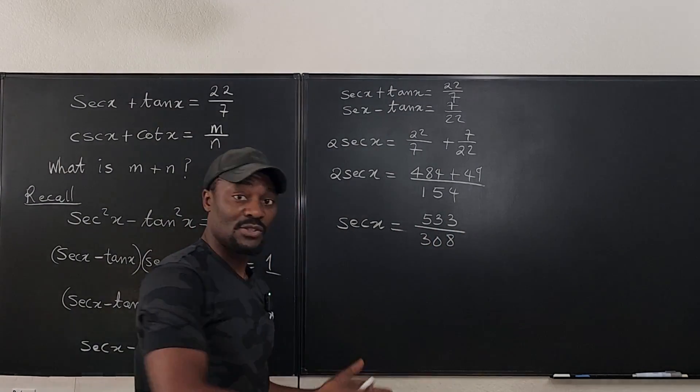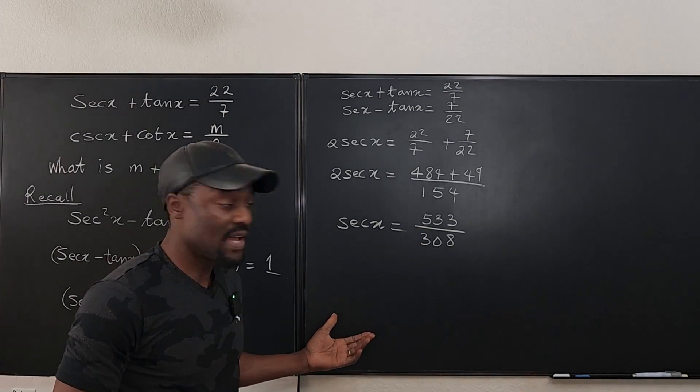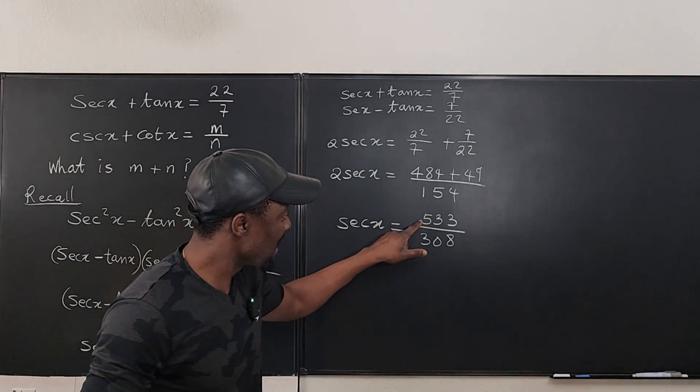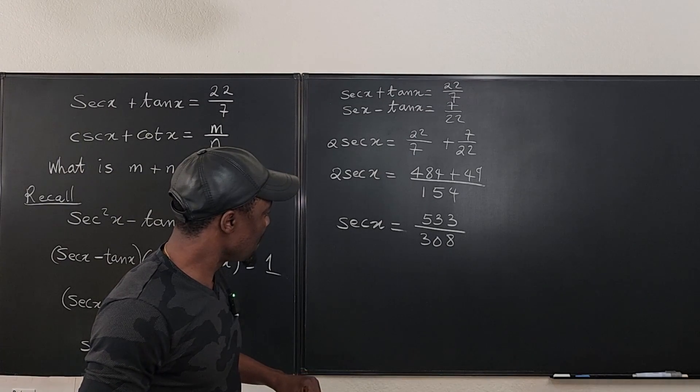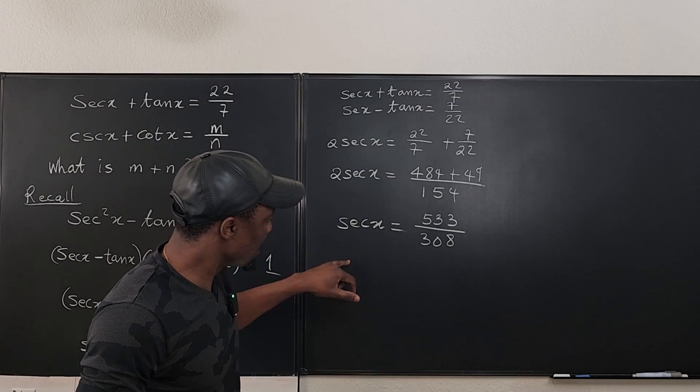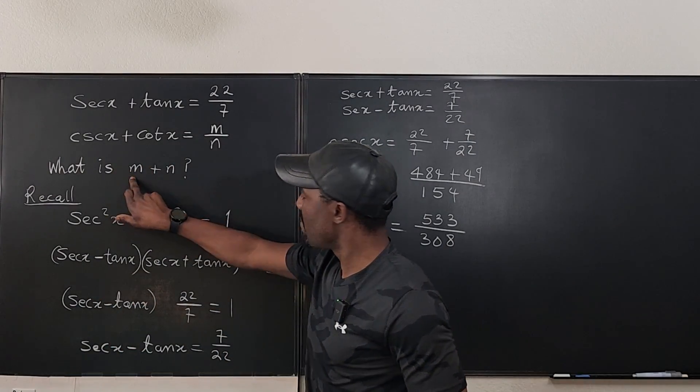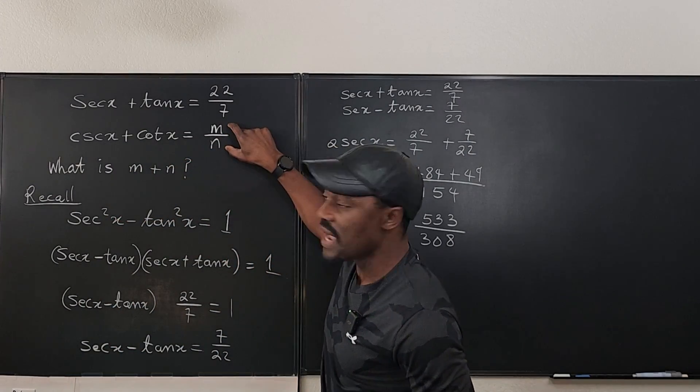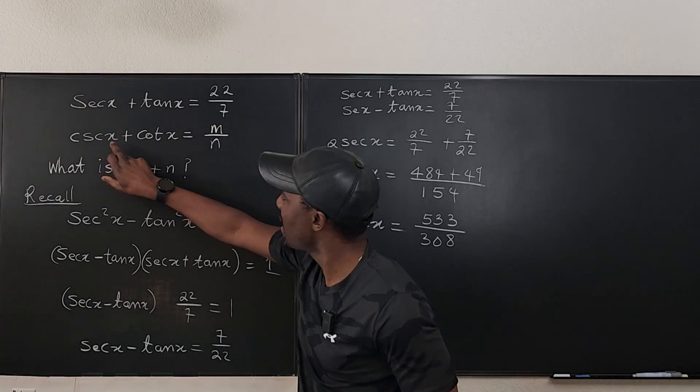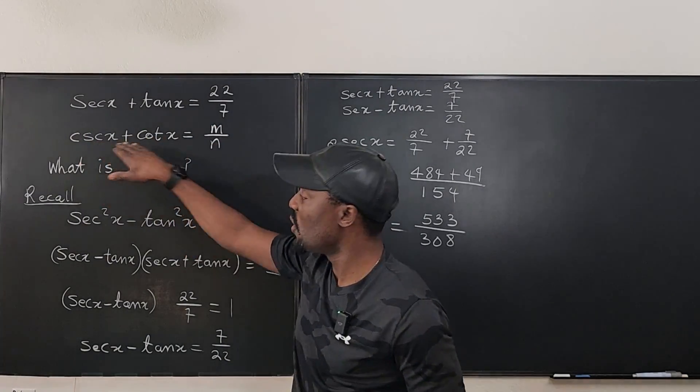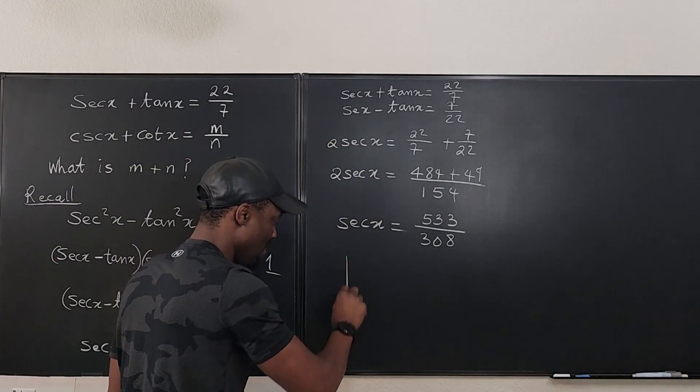So we have a trig ratio and this cannot be reduced. So we're just going to leave it that way. They're relatively prime. That is, I don't have a number that divides 533 that also divides 308. So what do I do next? I need to, that's it. So remember what we're looking for is m plus n. And this is where m and n show up in the problem. So I'm going to go here and say, what is cosecant x and what is cotangent x? Well, I may not know them from here, but I can find them from here by just drawing my triangle. Watch me.